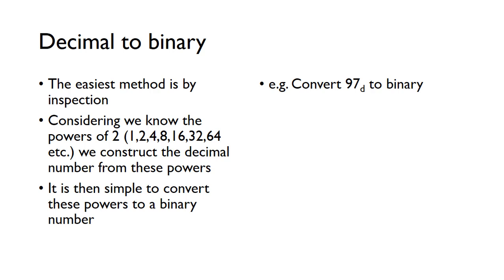So for decimal to binary, the easiest method is just by inspection. So we know each column is just a power of 2, so obviously 1, 2, 4, 8, 16, 32, and so on. So we just need to figure out which of those numbers we need to be able to construct the decimal number, and then it's trivial then to convert that number then into binary.